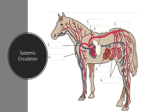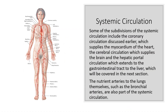The systemic circulation includes all the arteries and arterioles that carry oxygen and nutrient-rich blood from the left ventricle to the systemic capillaries, plus all of the veins and venules that return oxygen-poor blood to the right atrium after flowing through the body organs. Of note are the aorta — the largest artery of the body — and the vena cava, the largest vein in the body.